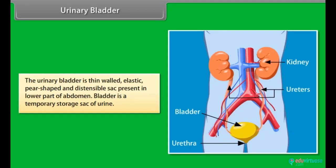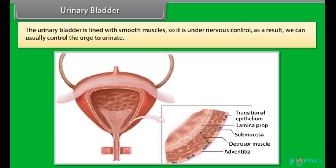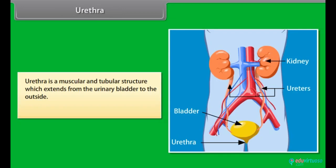The urinary bladder is a thin-walled, elastic, pear-shaped, and distensible sac present in the lower part of the abdomen. It is a temporary storage sac of urine. The urinary bladder is lined with smooth muscles, so it is under nervous control; as a result, we can usually control the urge to urinate. The urethra is a muscular tubular structure that extends from the urinary bladder to the outside and carries urine out of the body.